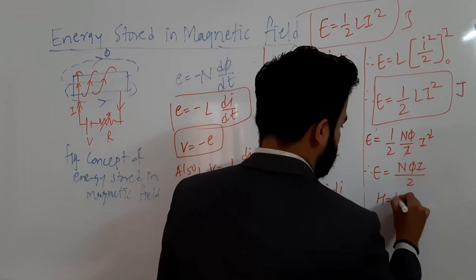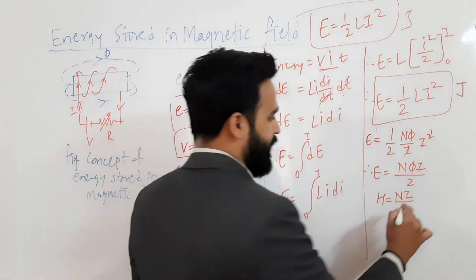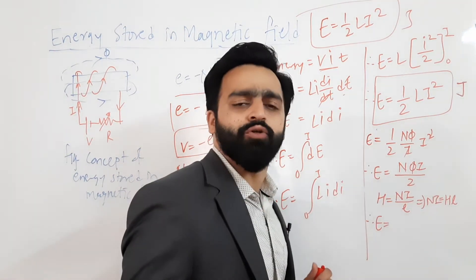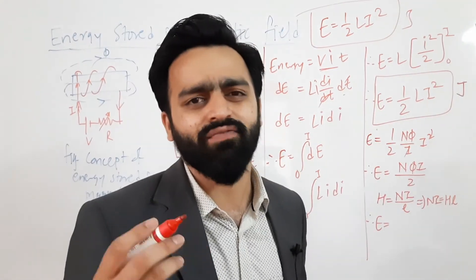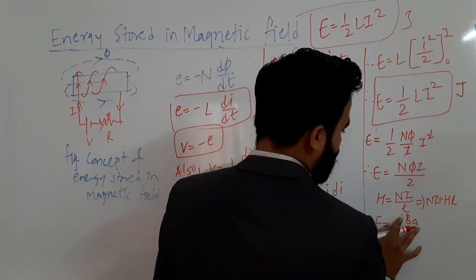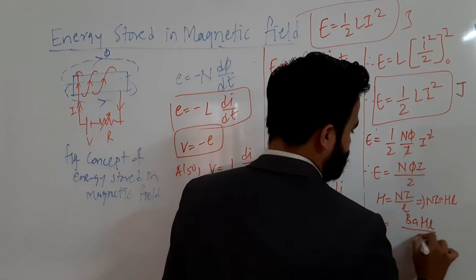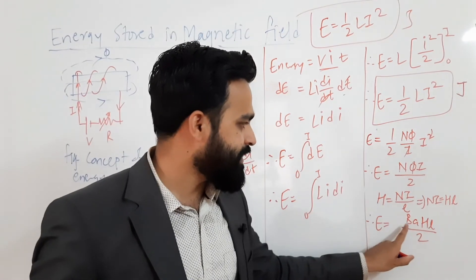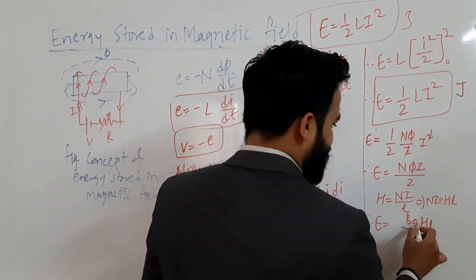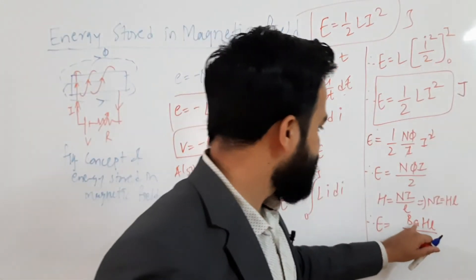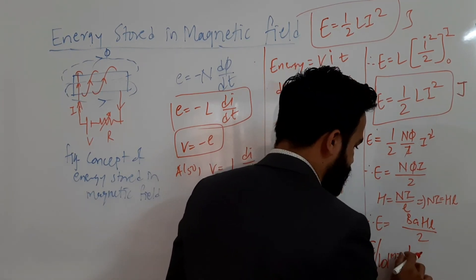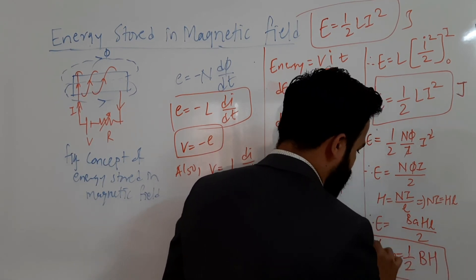We also use the equation H = NI/l, which implies NI = H·l. Substituting both: E = B·A·H·l / 2. Here, A×l is volume. Moving the volume to the left-hand side gives: E per unit volume = (1/2)·B·H. This is a very important equation — energy stored per unit volume in joule per meter cubed equals (1/2)·B·H.